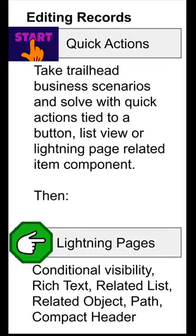Then, start editing lightning pages so that you can present information better. Learn how to use conditional visibility to make rich text messages appear and tell your user what they need to do next. Put the related lists on the page when it makes sense using conditional visibility. Use the related object when there is a related object. Use the path component. Use the compact header component. Learn how all of these can help you edit records effectively.